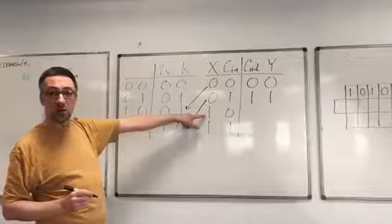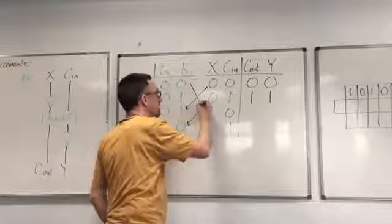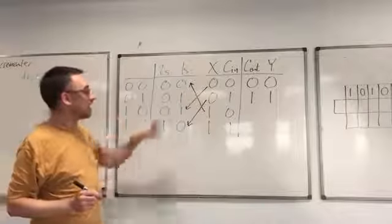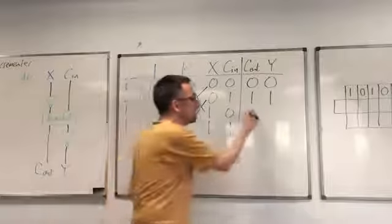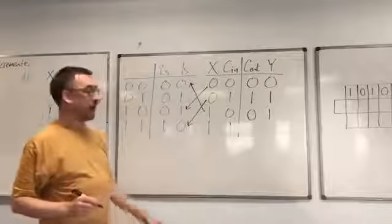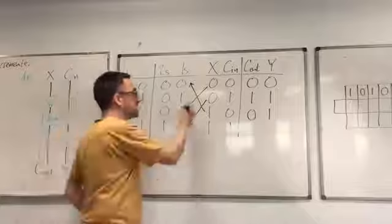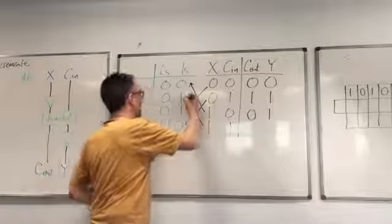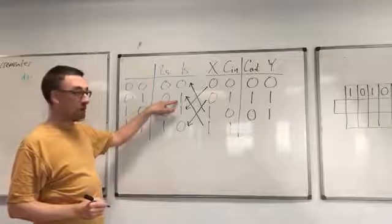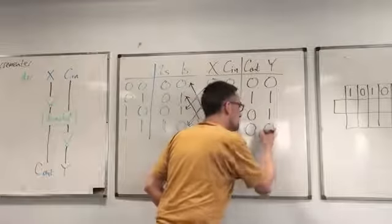When 1,0 comes into the decrementor, that means we're sending 0,0 into the half adder. 0,0 comes out of the half adder and then the 0 on the right is negated to give us a 1. And finally, if 1,1 goes into the decrementor, then the 1 on the left gets negated and we're in this row of the truth table. 0,1 comes out of the half adder and so the 1 gets negated giving us 0,0.